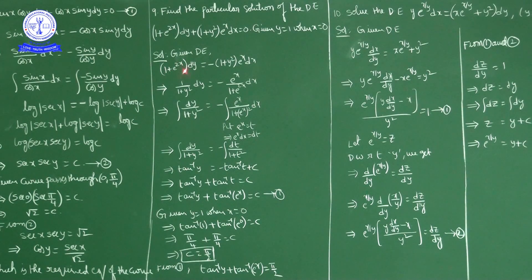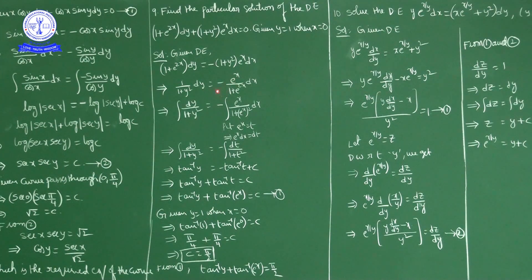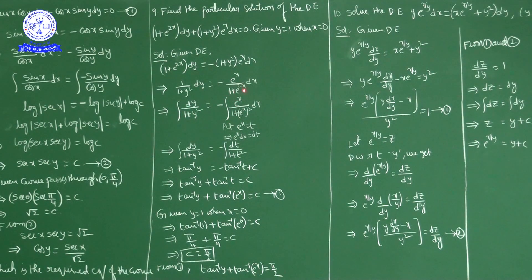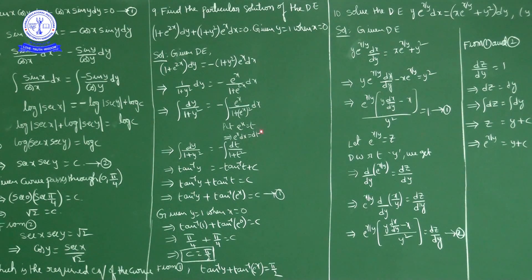Rearranging: (1 + e²ˣ)dy = −(1 + y²)eˣ dx, so dy/(1 + y²) = −eˣ dx/(1 + e²ˣ). Variable separation is complete. Integrating both sides: ∫dy/(1 + y²) = −∫eˣ dx/(1 + eˣ)². For the right-hand side, substitute t = eˣ, so eˣ dx = dt, and the denominator becomes 1 + t². The integral reduces to −∫dt/(1 + t²).